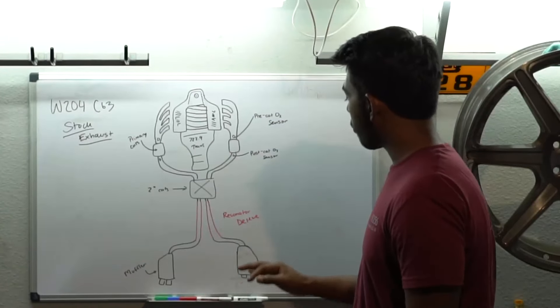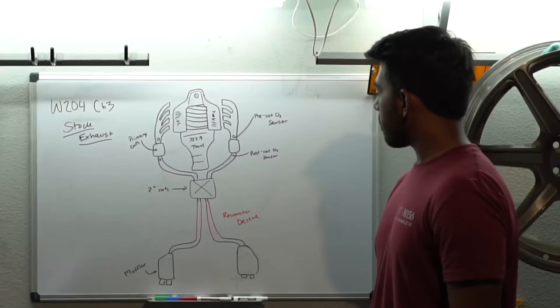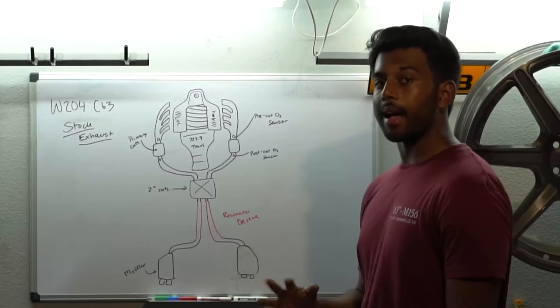Next up, we have removing your resonator, so a full-on resonator delete. This time you've left the secondary cats in, but have chosen to remove the resonator, and here's what that sounds like.